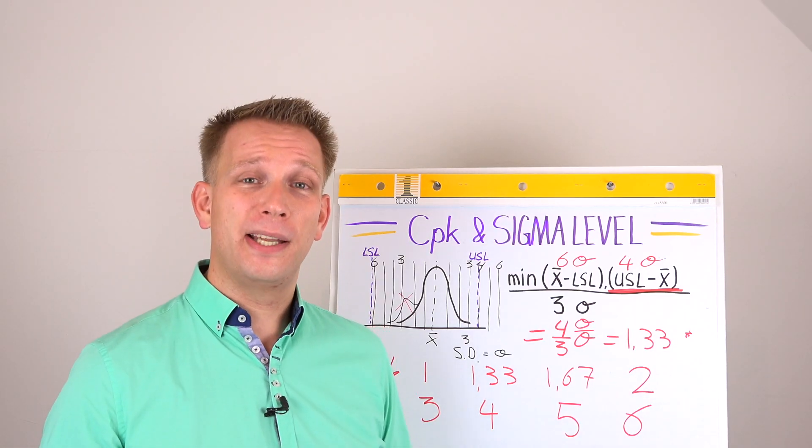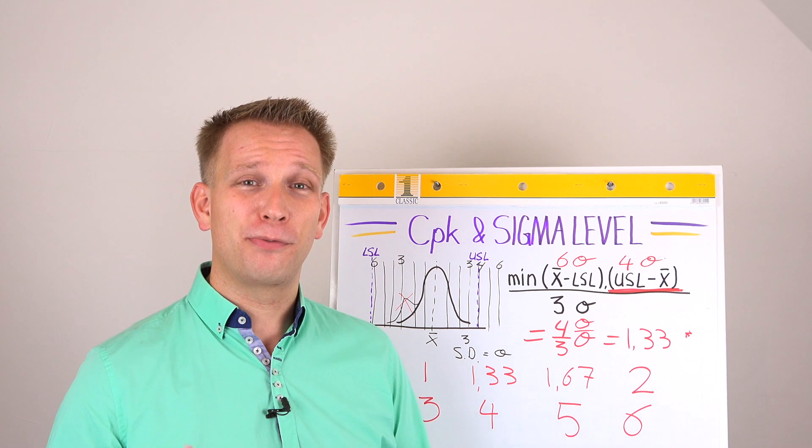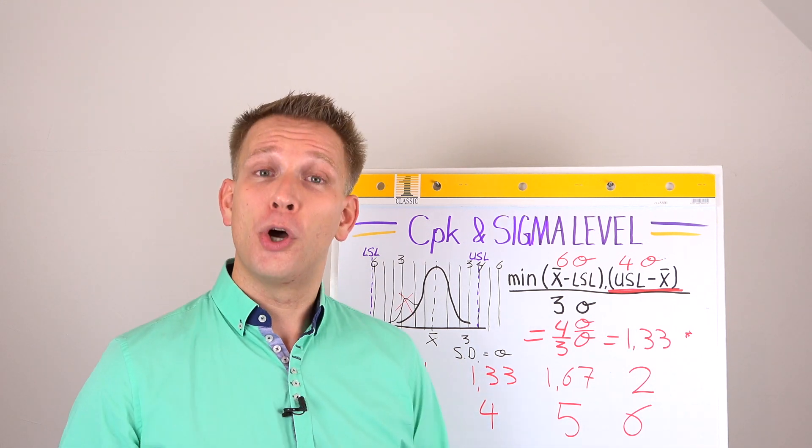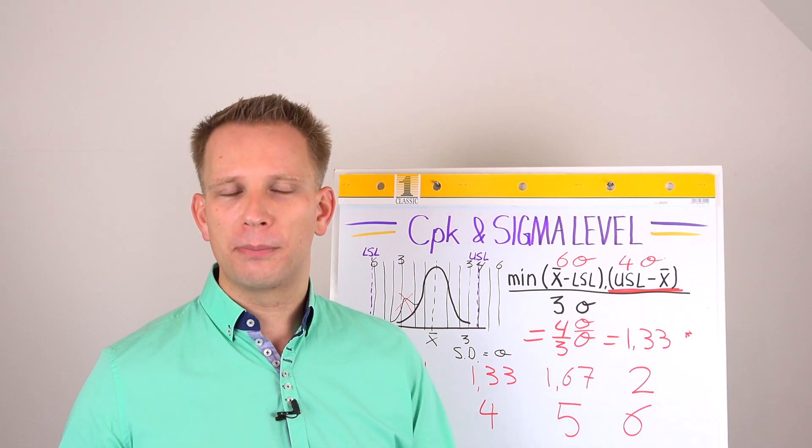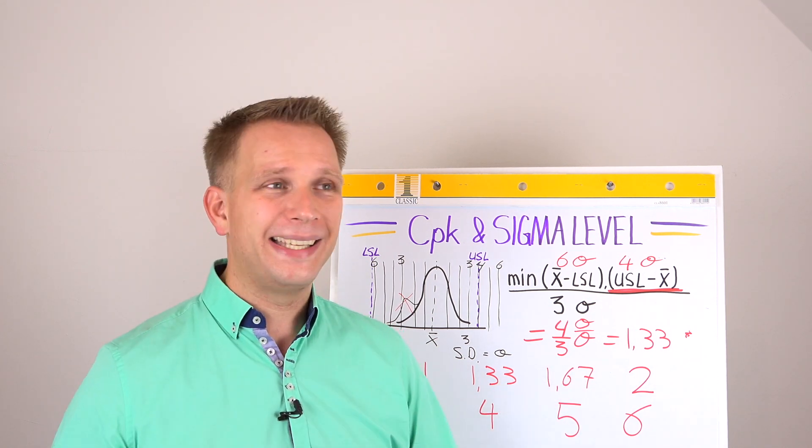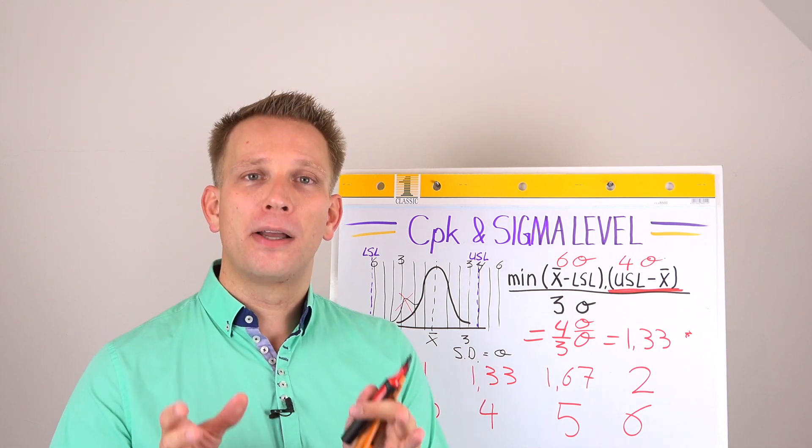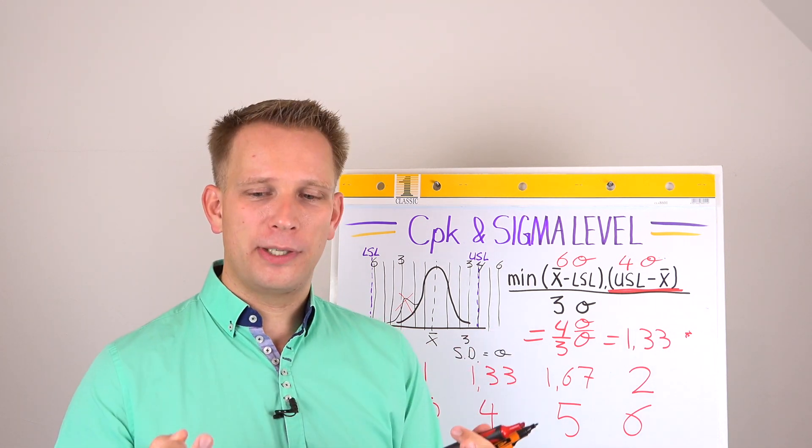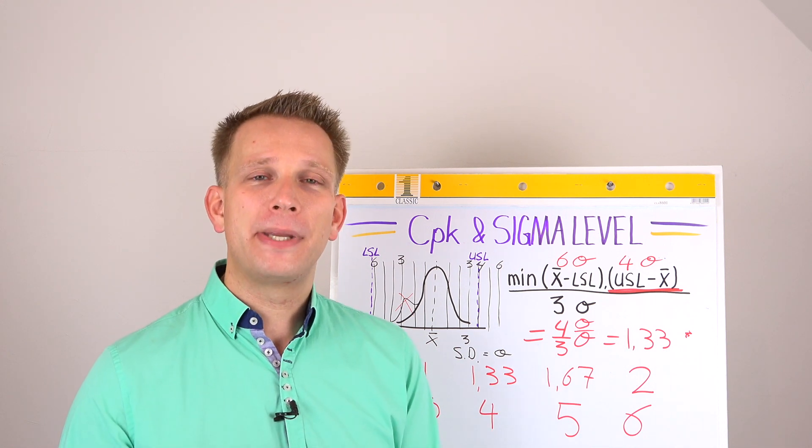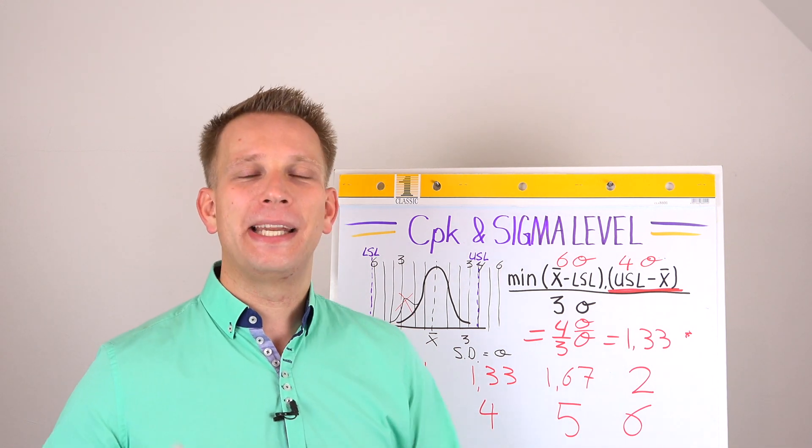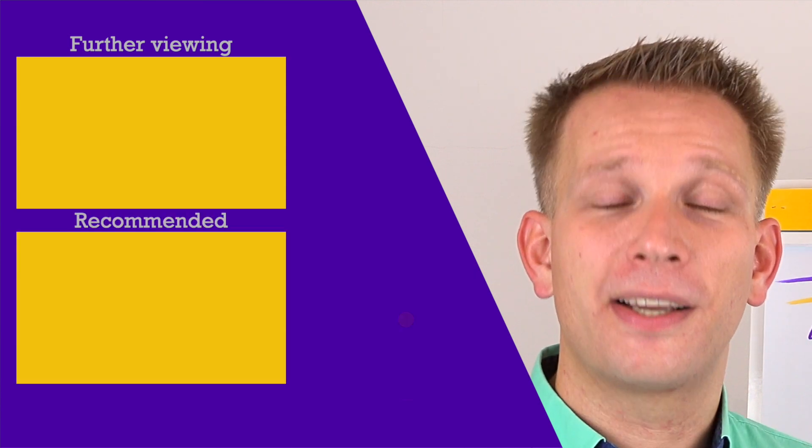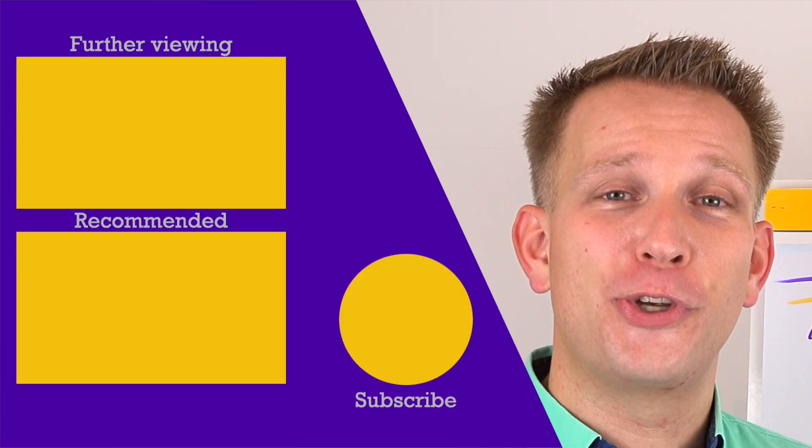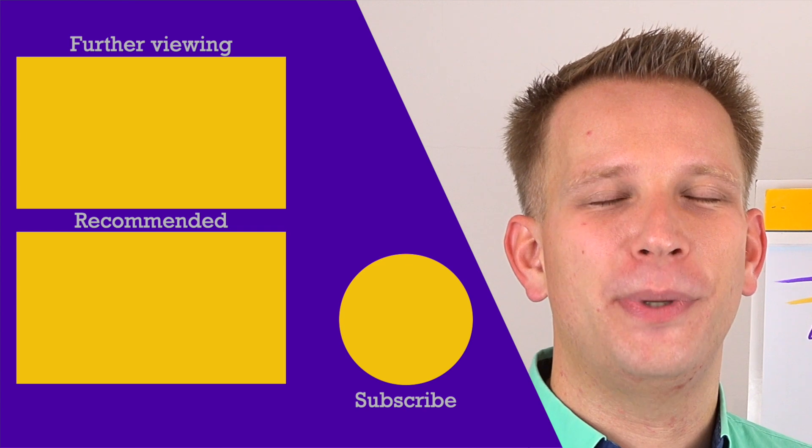Now, I hope you liked this small explanation of CPK, sigma level, how to convert between the two. If you did, don't forget to hit that like button. Also, drop me a comment if you would like me to explain any of the other terms that we use within performance excellence, continuous improvement, lean, TPM, six sigma. All of the things where you think, oh, somewhere it was in the exam or maybe in the books, but I didn't get the meaning. Please don't explain it to me. I'll be happy to do that for you. Drop a comment. I'll make a video about it. For now, I wish you the best of luck in your six sigma journey. And as always, don't forget to enjoy the improvement journey.